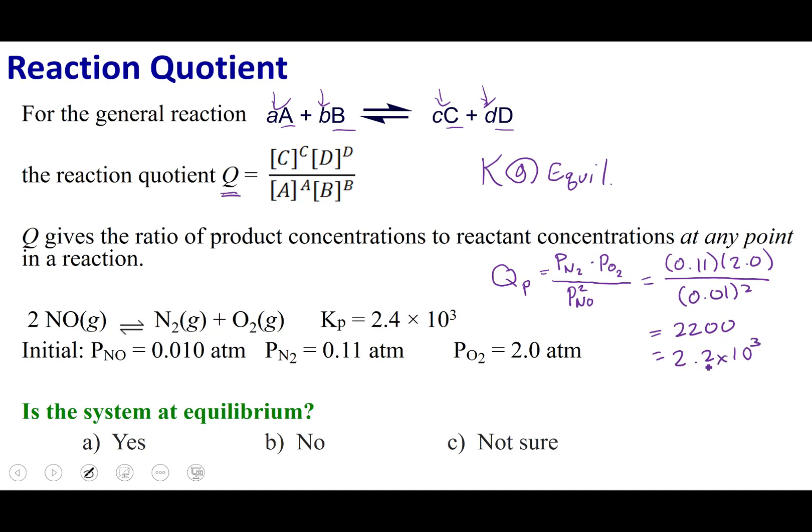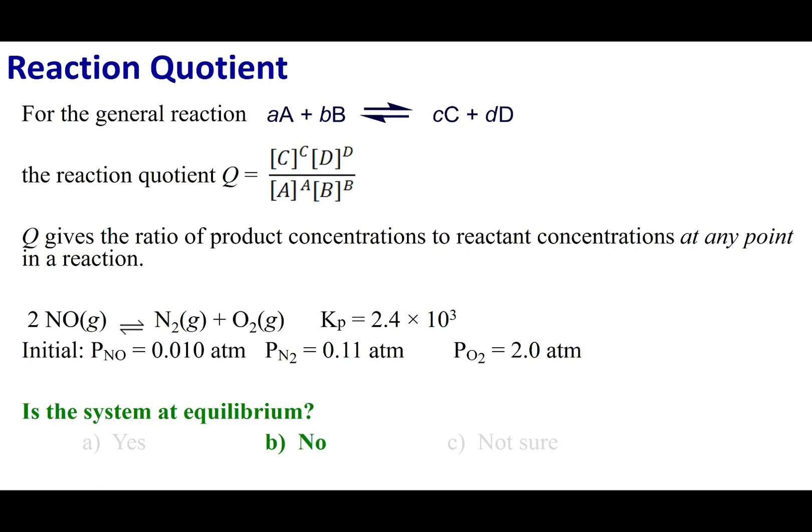Now, what you'll notice is that QP and K are different numbers. Now, if they are different numbers, that means that I am not at equilibrium. So, if I'm not at equilibrium, which way is my reaction going to go? Am I going to make more products, or am I going to make more reactants? And this is what Q is going to tell you.